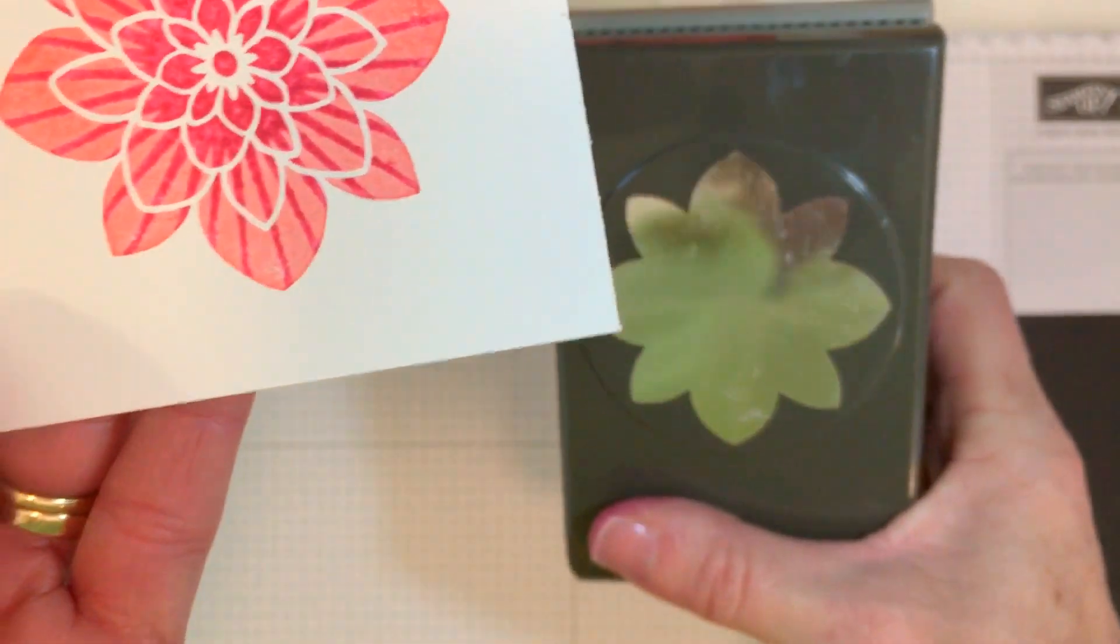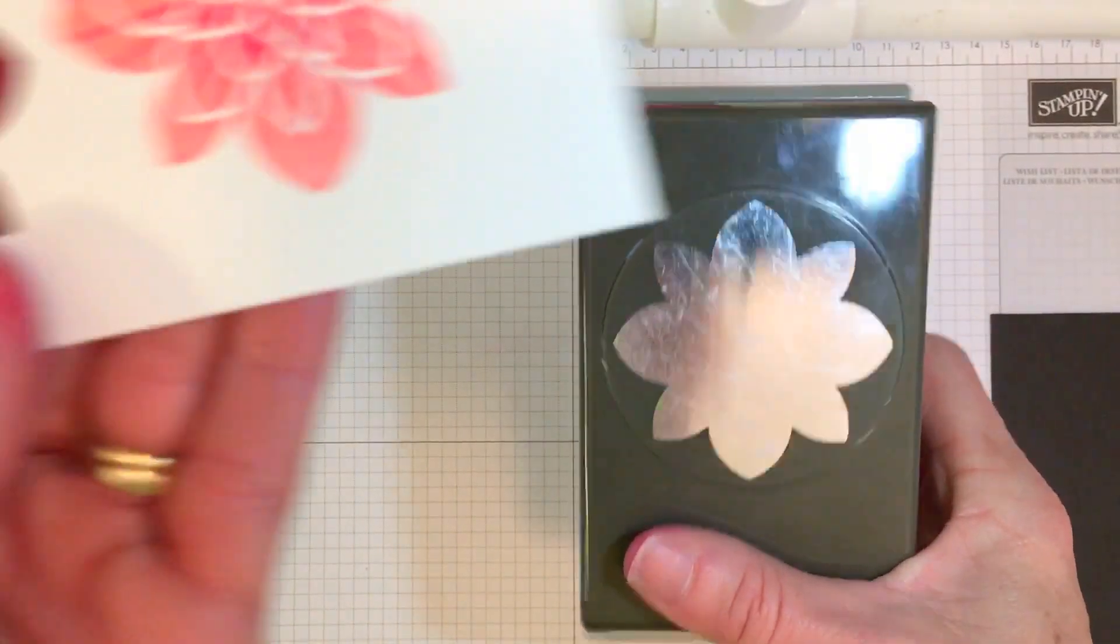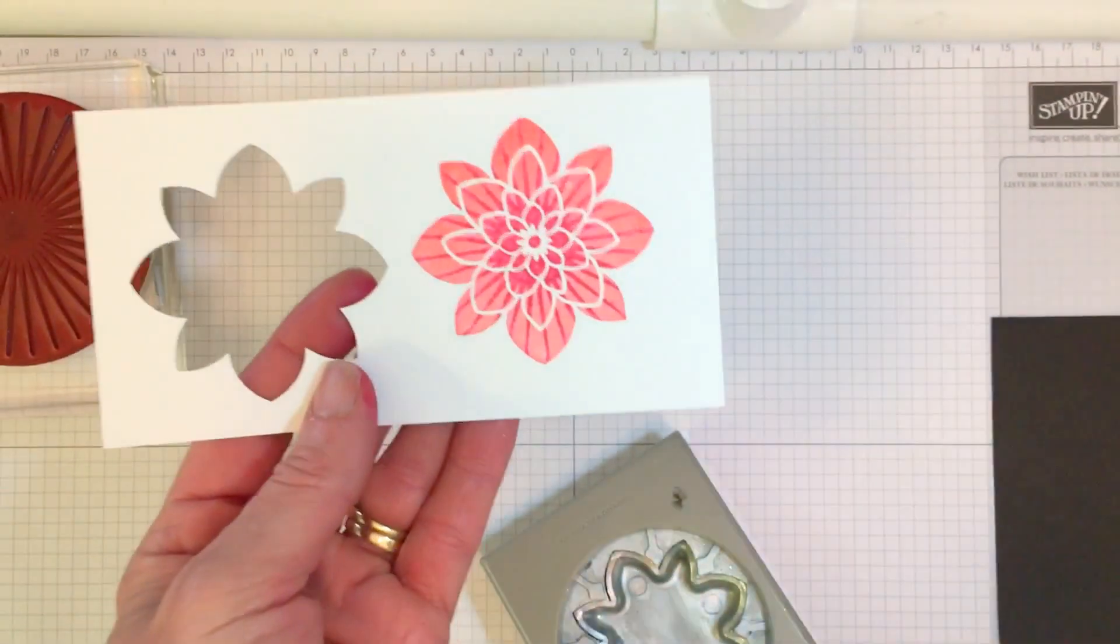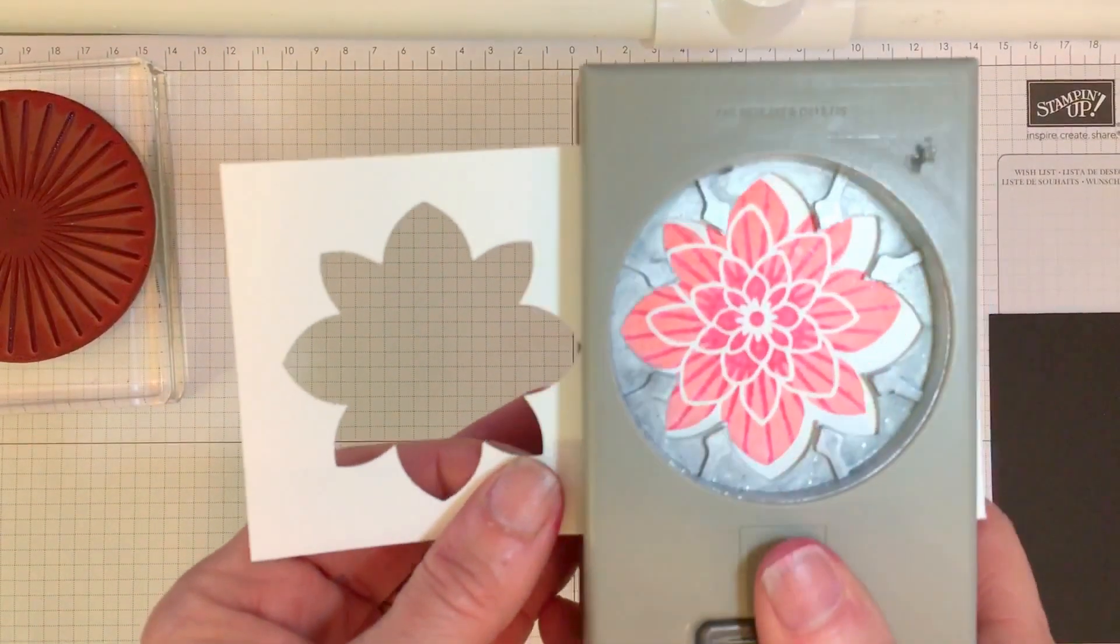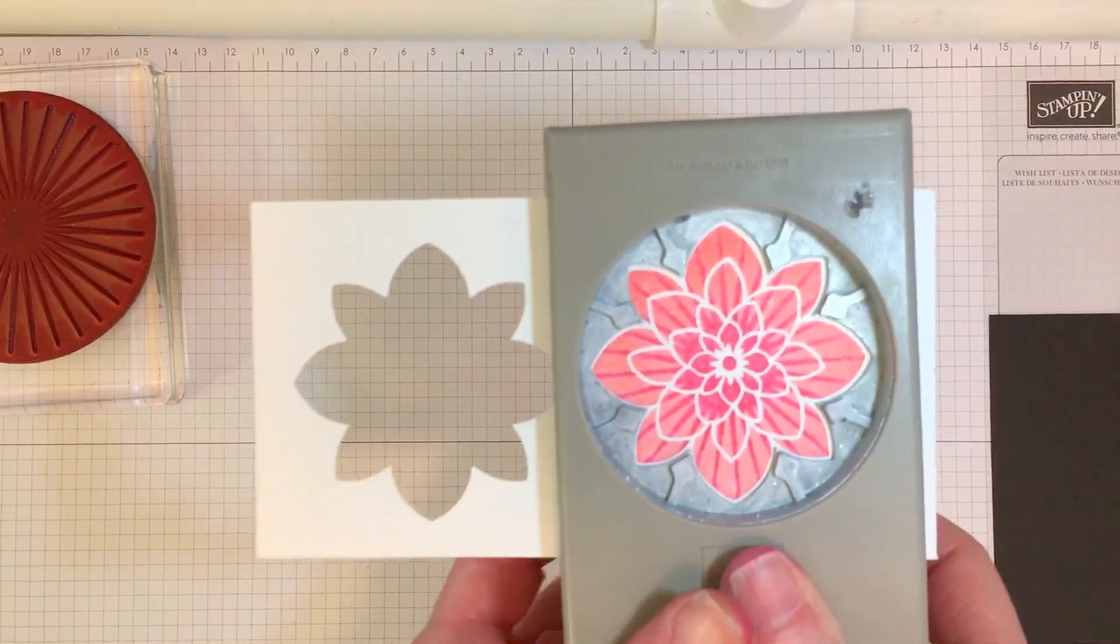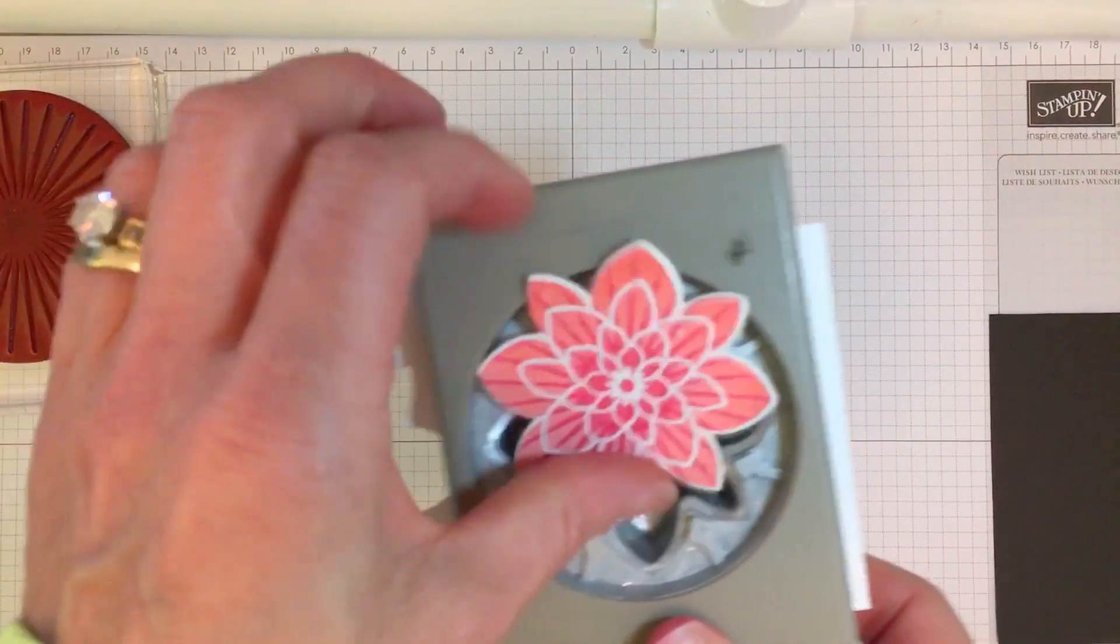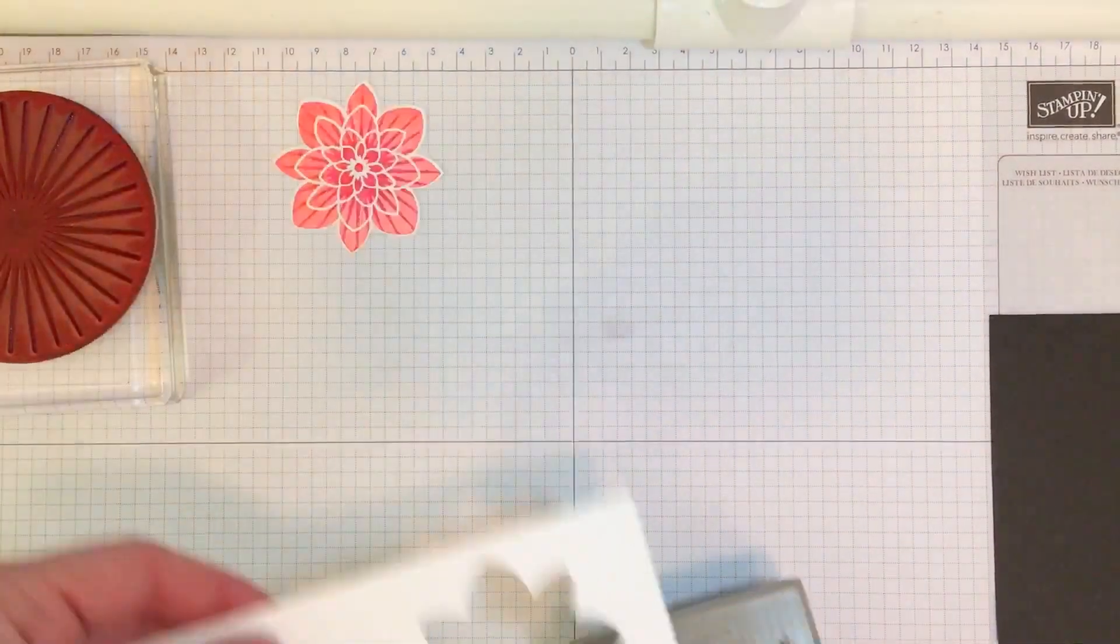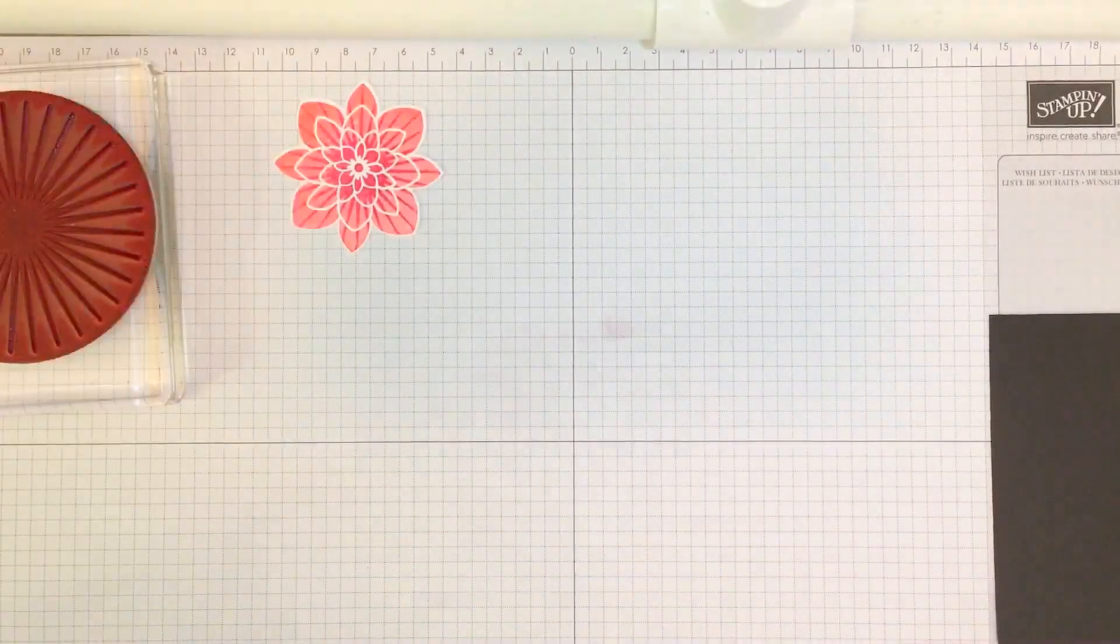Now, I'm going to take the medallion punch, which happens to be retiring as well, and we're going to just scoot this right in. Look at how nicely this fits into the punch. And then you just punch it out, and you have your medallion. Put that off to the side.